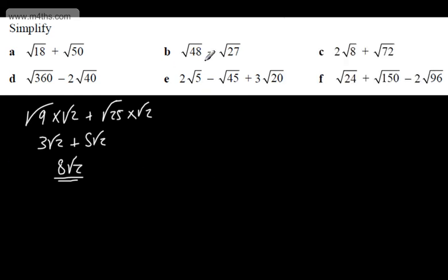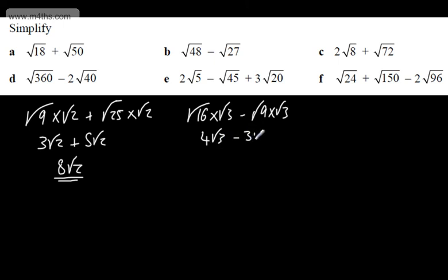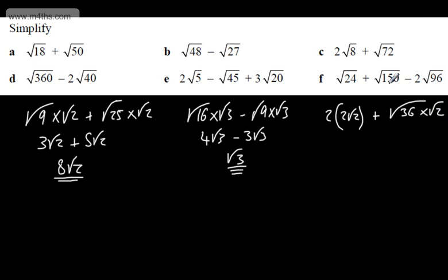For root 48 minus root 27: 48 is 16 times 3, so root 16 multiplied by root 3, minus 9 times 3, so root 9 multiplied by root 3 — giving 4 root 3 minus 3 root 3, which is just 1 lot of root 3. For the next one, root 8 is 2 root 2, so we have 2 lots of 2 root 2, plus root 72, written as root 36 multiplied by root 2. If you don't spot the squares, just prime factorise them. So 4 root 2 plus 6 root 2 gives us 10 root 2.